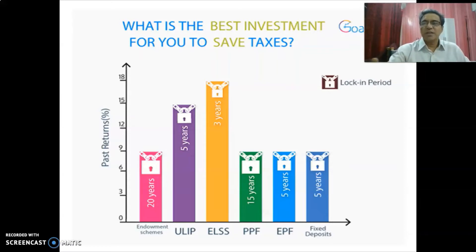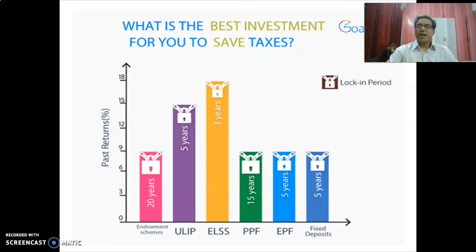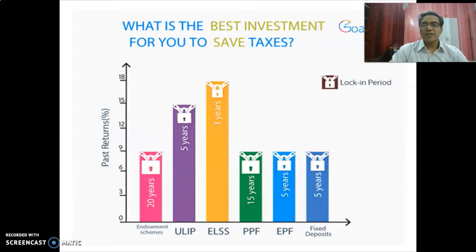We are going to talk about tax savings, tax exemptions, mutual funds, insurance policies, fixed deposits in the bank, and ELSS. Each product has different advantages. We will compare ELSS vs ULIPs.